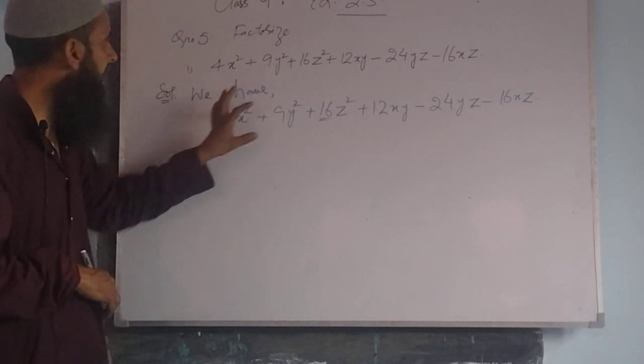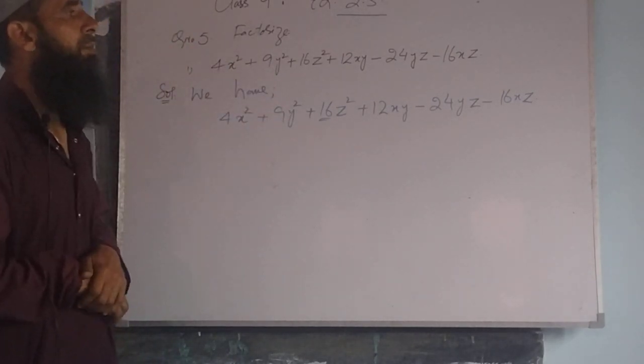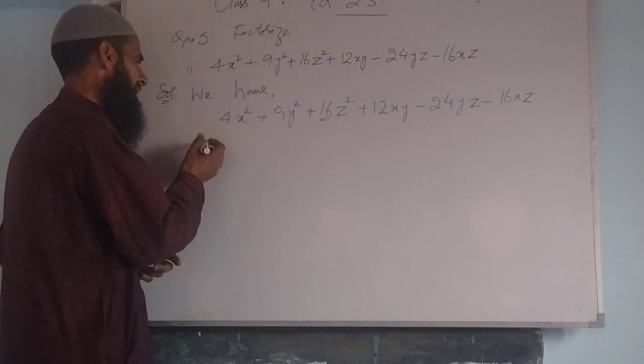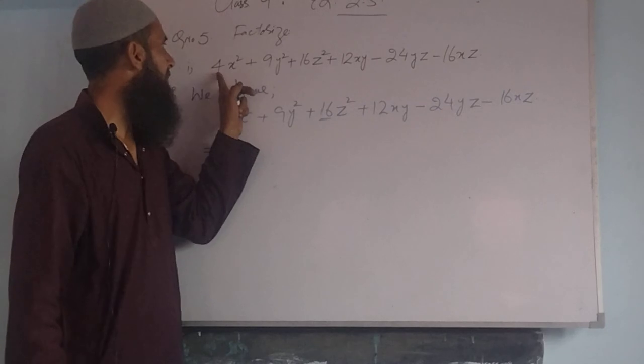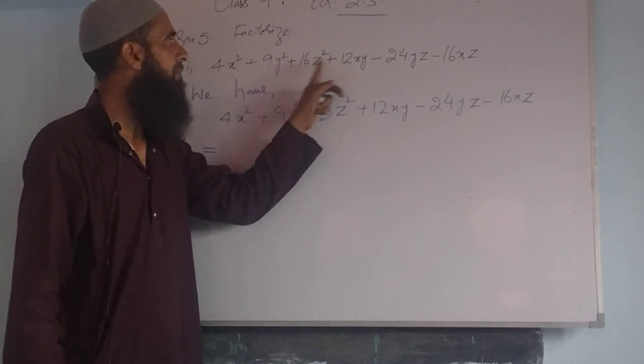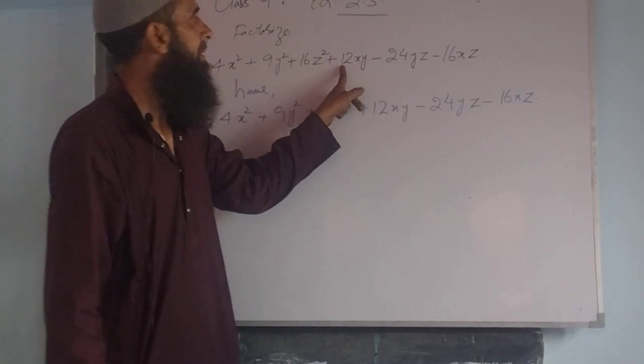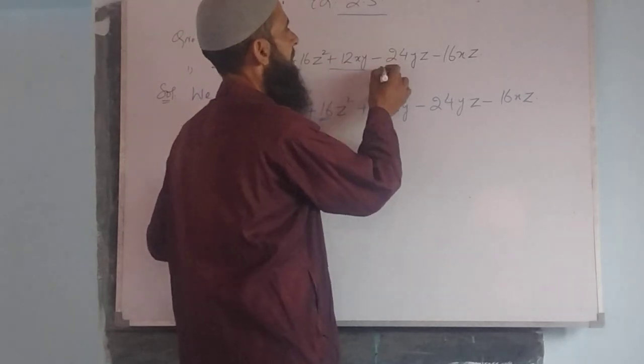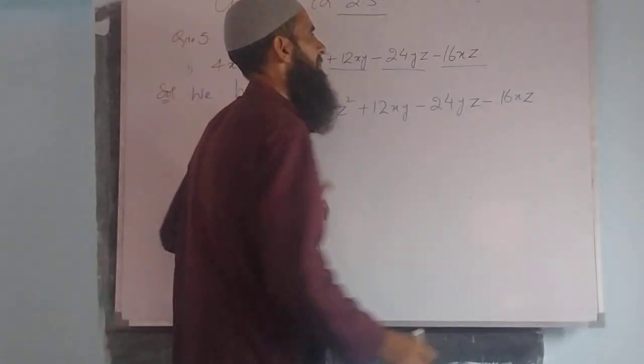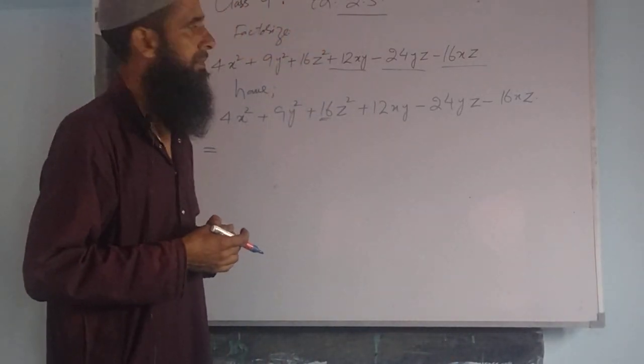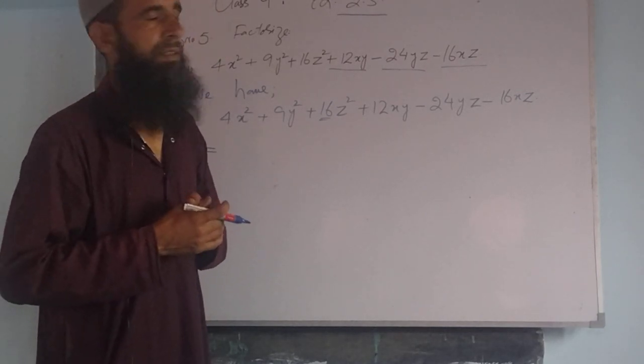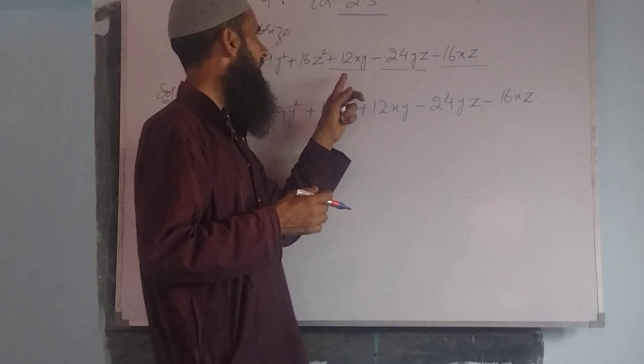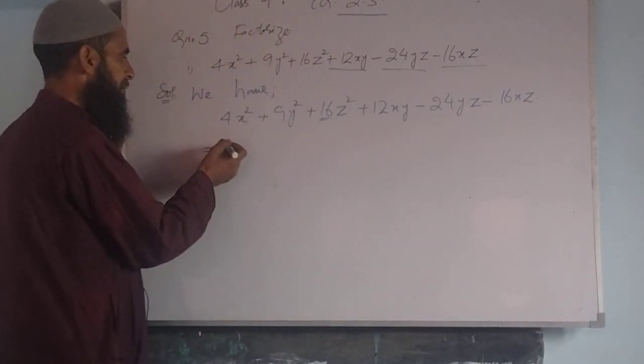Now take the solution. We have the given polynomial. It is now equal to: This one is negative, this one is negative. We have to factorize this polynomial.